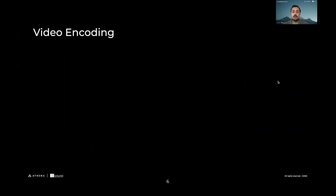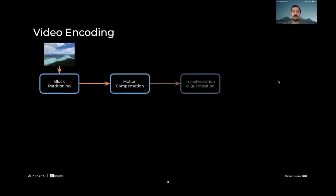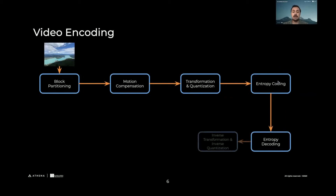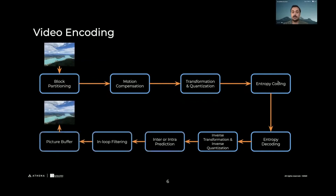Preparing the videos is also challenging because of the huge size of raw videos. We call this process video encoding and it consists of multiple building blocks. Block partitioning, motion compensation, transformation and quantization, and entropy coding are the main building blocks of the encoder side. On the decoder side, we do these operations in reverse and at the end we get the decoded video ready to be displayed.